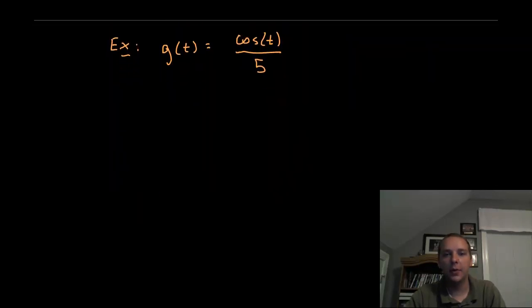Alright another thing we have to get comfortable with and I changed something up in this example, the variable doesn't always have to be x, it can be t or theta, it doesn't matter what the letter is. So in this case we'll be differentiating g with respect to t so you might have g prime of t would be equal to what?